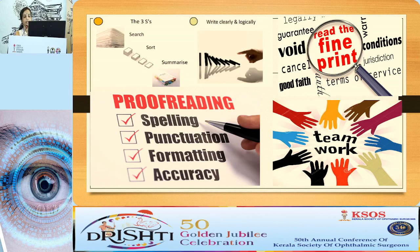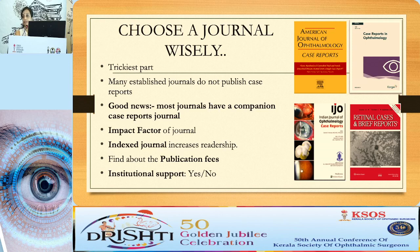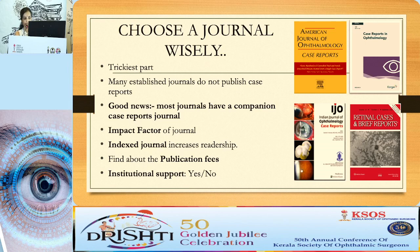Write it logically, proofread it, and read the fine print of your target journal. Choose the journal wisely — most established journals do not publish case reports, but many important journals have a companion case report journal, like the American Journal of Ophthalmology and IJO Case Reports. Look at the impact factor, check whether it is an indexed journal, and most importantly, look at the publication fees before you submit — see if you can afford it and whether you have institutional backup.